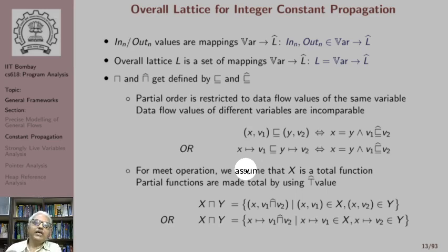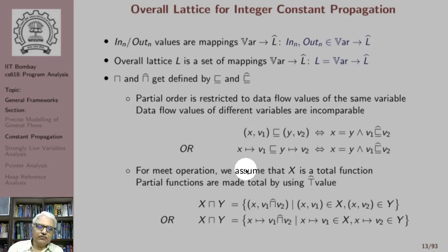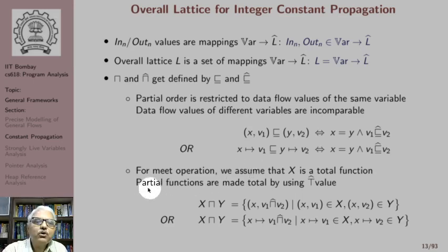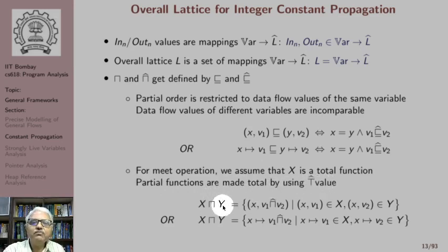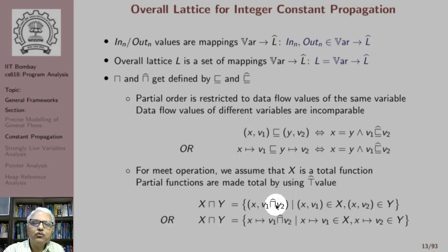If there are m variables, we assume that the values of all variables exist — that is the meaning of a total function. If there is no value for a variable, we assume its value is top. So partial functions are made total by using the top value. This simplifies many things. Now we can say x meet y is just a set of pairs where each pair is a componentwise meet.